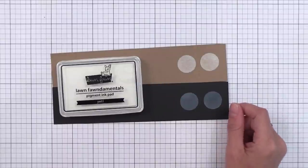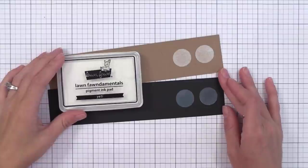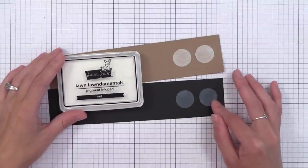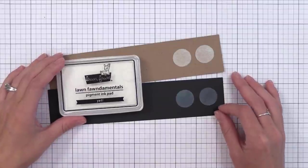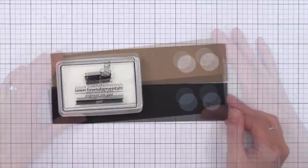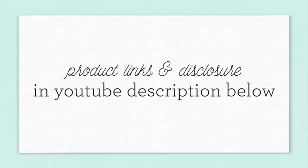Lawn Fawn has also released their only pigment ink. This is called Yeti. It's a white pigment ink. White pigment ink stay wet a little bit longer, so you can heat emboss them. And they're slightly opaque, so you can stamp on dark colored card stocks like you see here. This stamps very similar to the Hero Arts Unicorn white ink, which is my favorite. So if you're looking for a good white pigment ink, this is a great option for you.